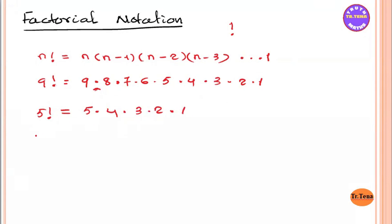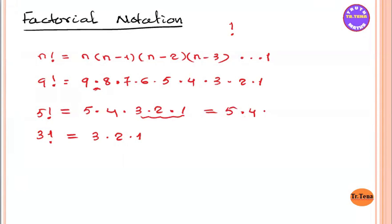Now, if you have 3 factorial, it will give you 3, 2, 1. Now, if you have 5 factorial, it will be 5, 4. If you have 3 factorial, it will be 3, 2, 1. If you have 3, 2, 1, it will be 3 factorial.